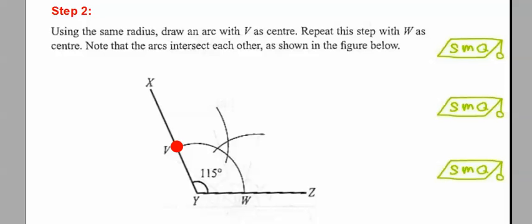Step 2. Using the same radius, draw an arc with V at the center, so our compass needle will be at V. Repeat this step with the compass needle at W until both arcs intersect each other.